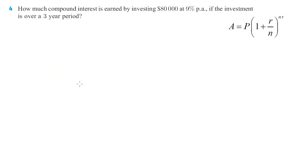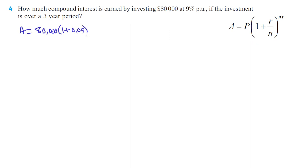Moving on to number four: how much compound interest is earned by investing $80,000 at 9% over three years? We're figuring out what the amount is. So P is $80,000. One plus our rate, which is 9%, 0.09. There's no compounding period, so the Ns don't matter here — they would just be one, so it doesn't change anything. And then it's to the three-year period, so that's to the third power.